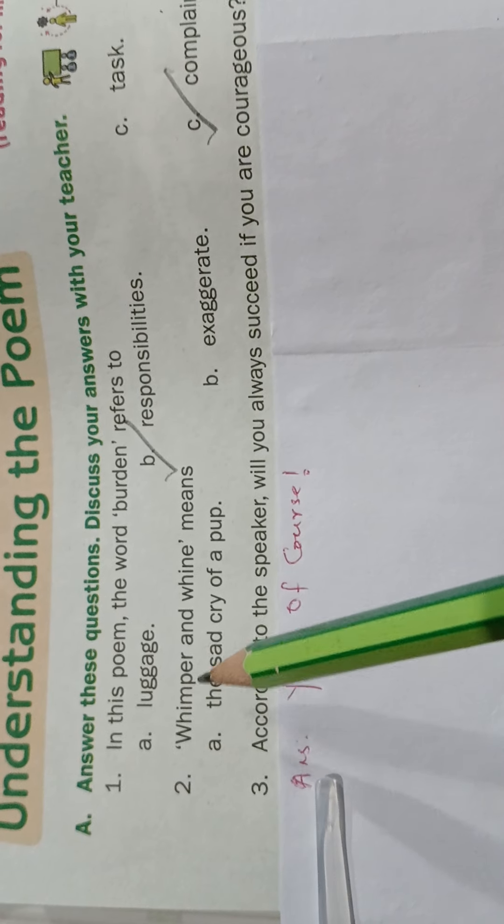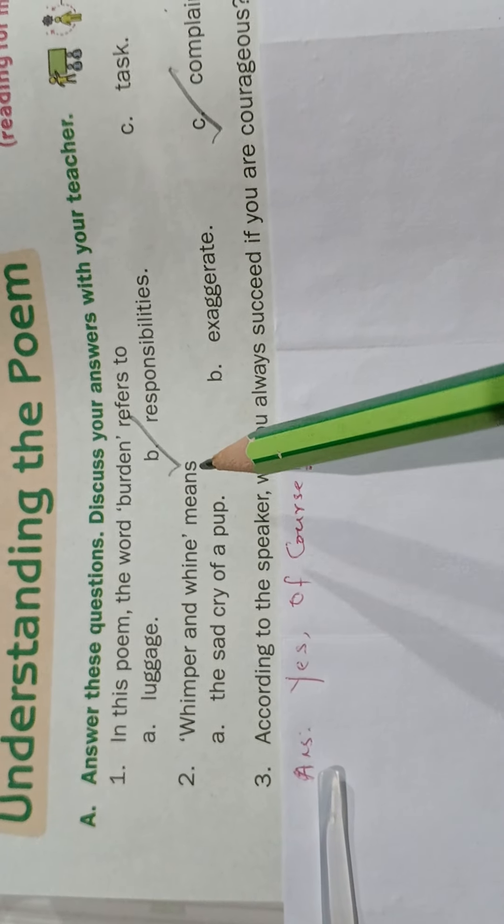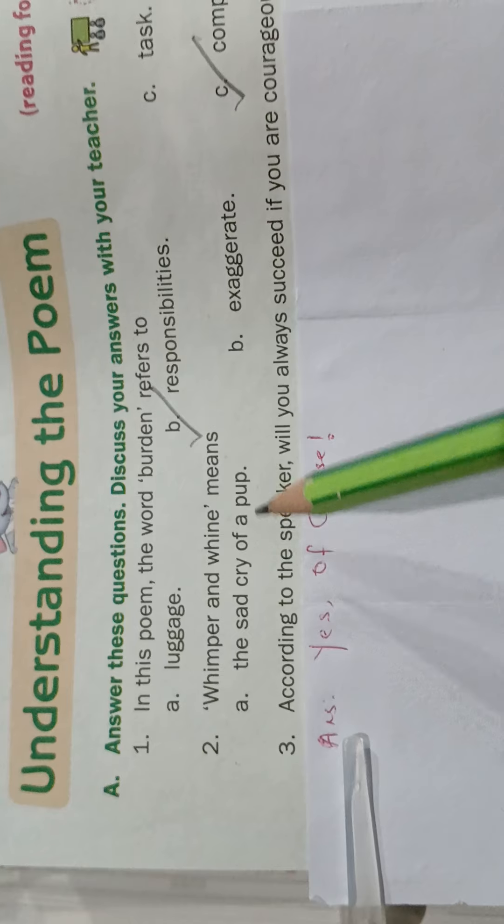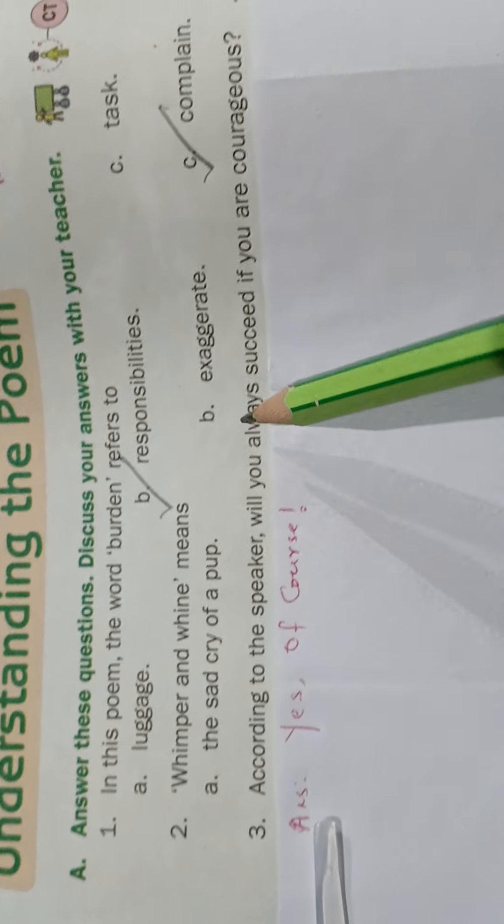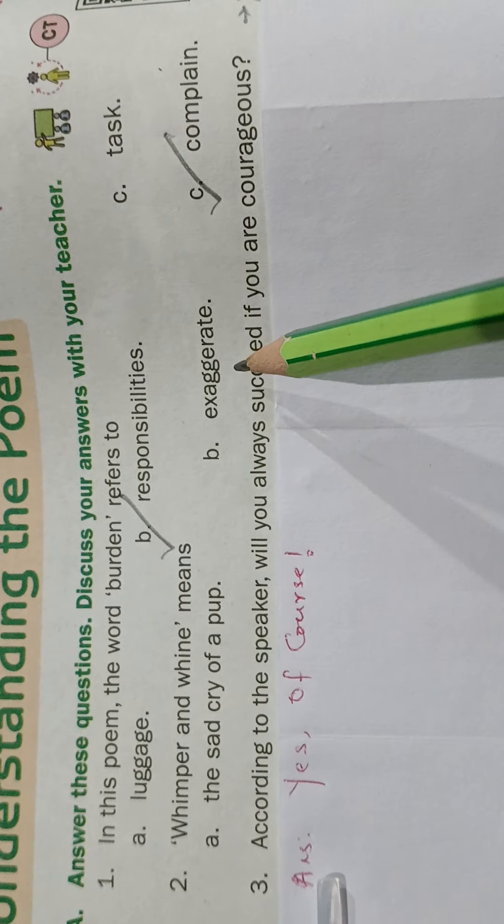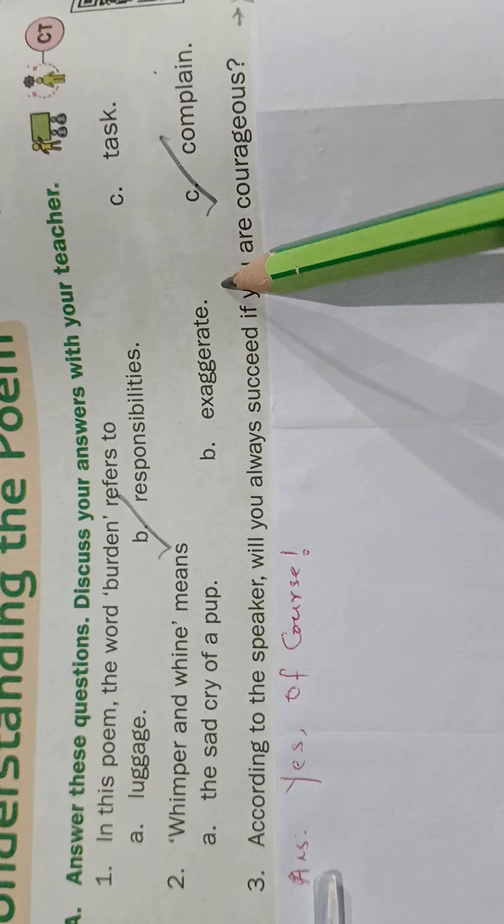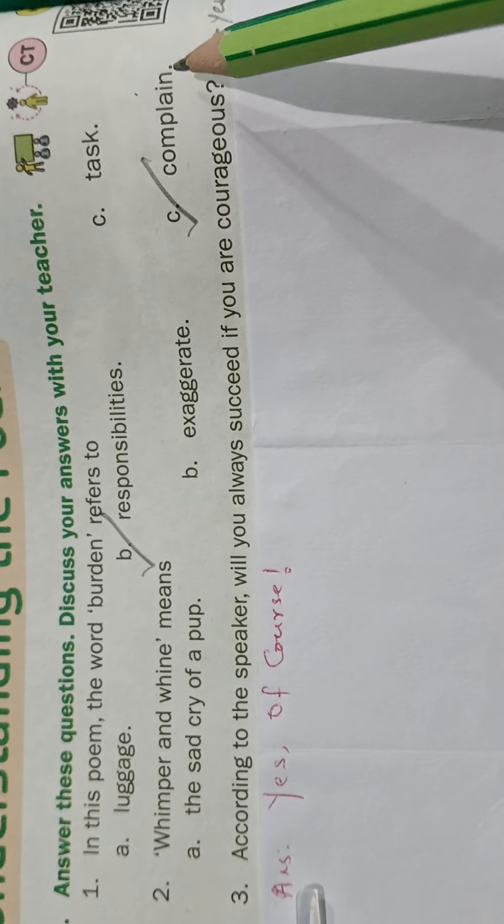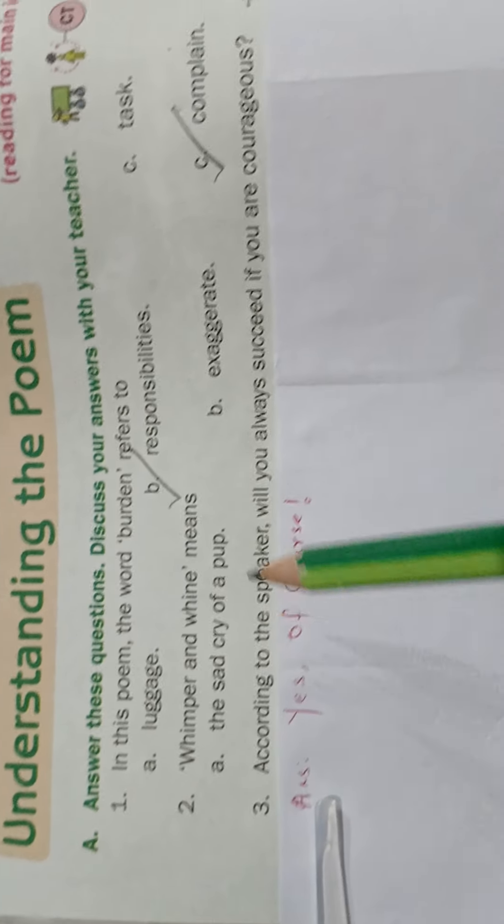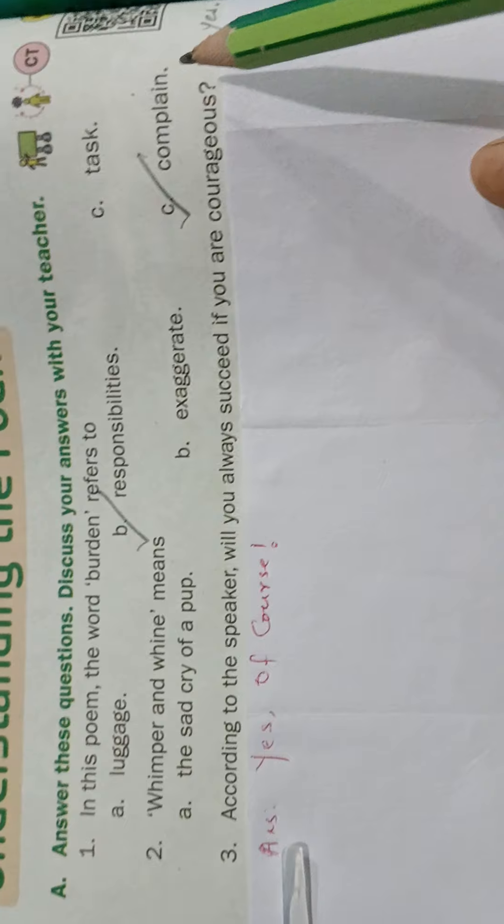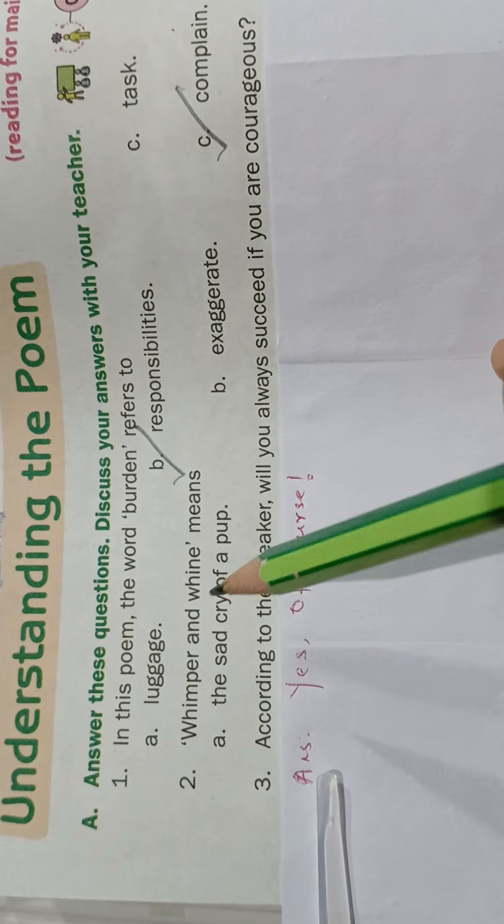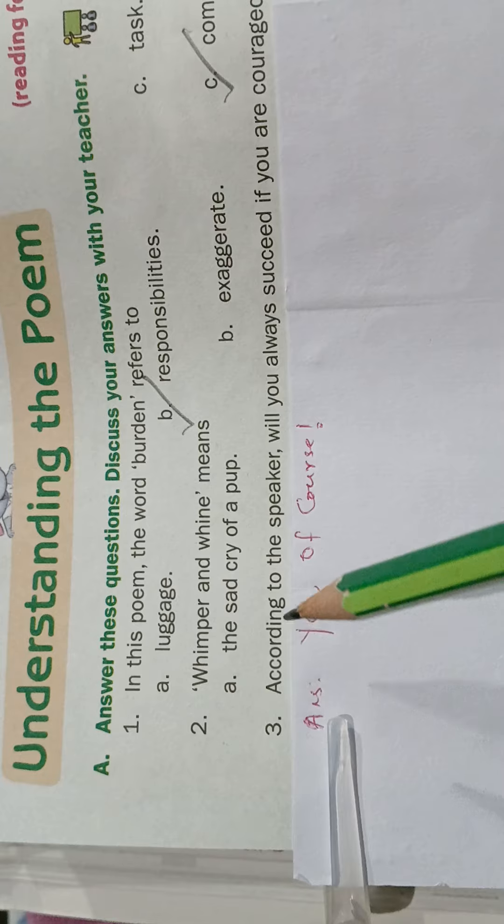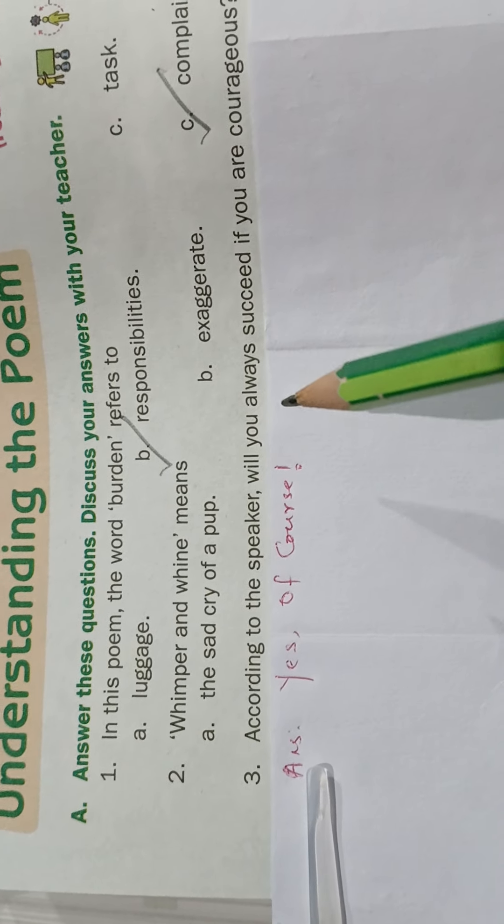Whimper and fine means: Option A the sad cry of a pup, Option B exaggerate, Option C complain. Correct option is Option C, that is complain. Whimper and fine means complain. Question number three.